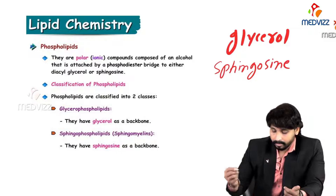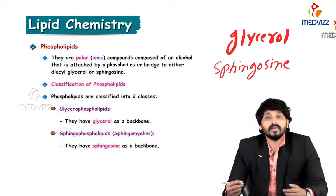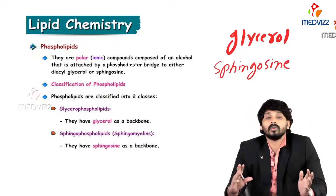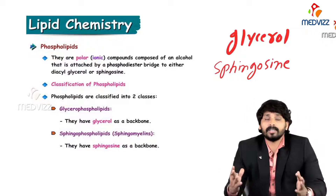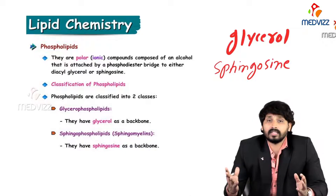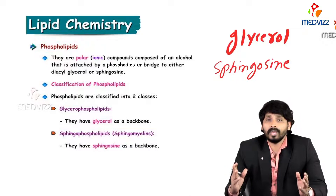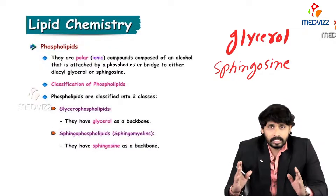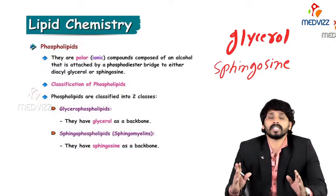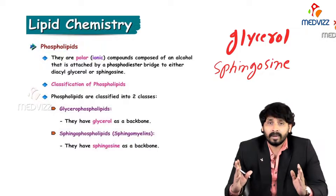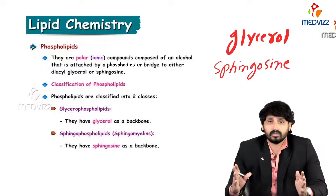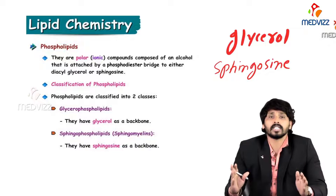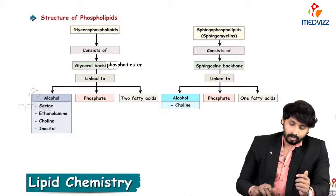Sphingosine serves as the backbone for sphingophospholipids. These are also known as sphingomyelins. Where do you come across myelin? In neurons — the structure of a neuron is covered by myelin sheath. These sphingophospholipids are extensively present in the myelin sheath of neurons, and that is why they are also known as sphingomyelins.